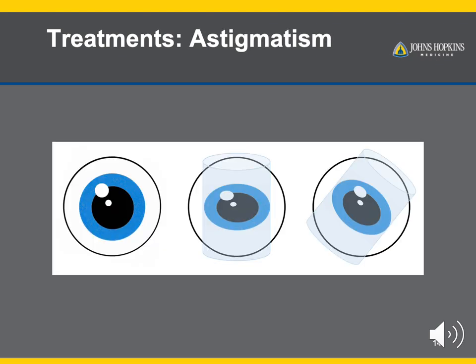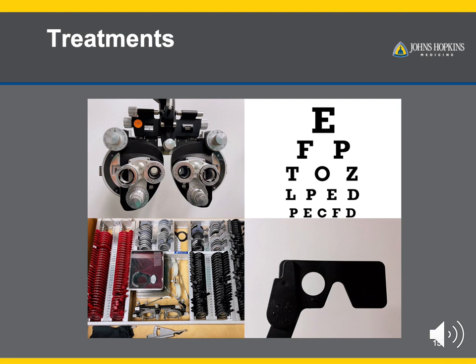For astigmatism, where the eye is not perfectly round, we use a cylinder lens to balance it out, stretching the light coming in from one direction without changing other directions. We can even change the direction the cylinder is oriented to balance it in any direction the eye is tilted. Regardless of the type of refractive error, the first step is to get a precise measurement of these errors so we can find the correct lens to fix it. These are some common equipment we may use in the clinic to get your measurements.